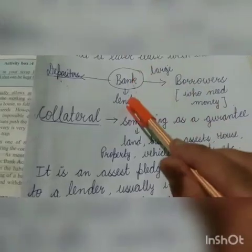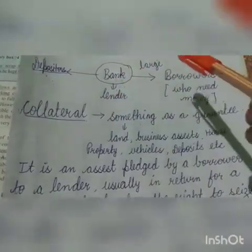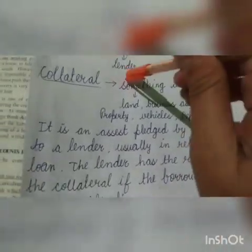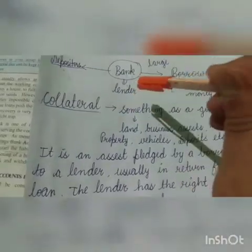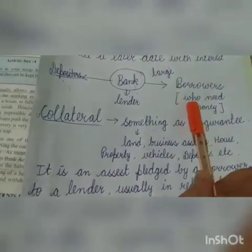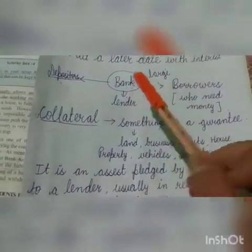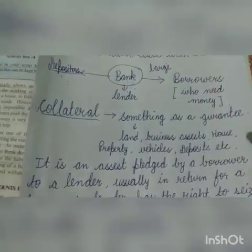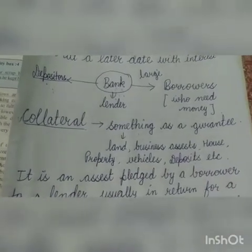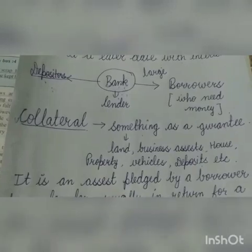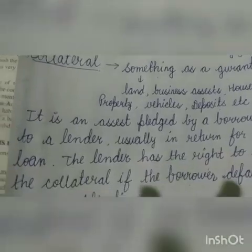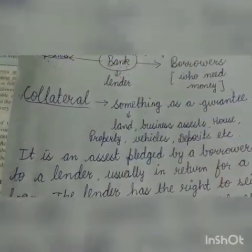Bank ke paas right hai ki agar borrower joh hai proper time pe repay loan nuhi kar pahya, to joh unka asset hai bank usko aapne paas rakh sakti hai. To simply collateral kya hota hai — sometimes jab bank borrower ko loan dhe raha hota hai, to bank joh hai woh bholta hai ki as a loan aap kuch security rakhou, ki hum bhi secure rahye ki aap hume money payback kar dhoge. Aur agar aap money payback nuhi kar pahe to joh aapne asset rakhha hoga as a guarantee, hum usko aapse lhe lenge. So simply collateral kya hoga — as a guarantee.